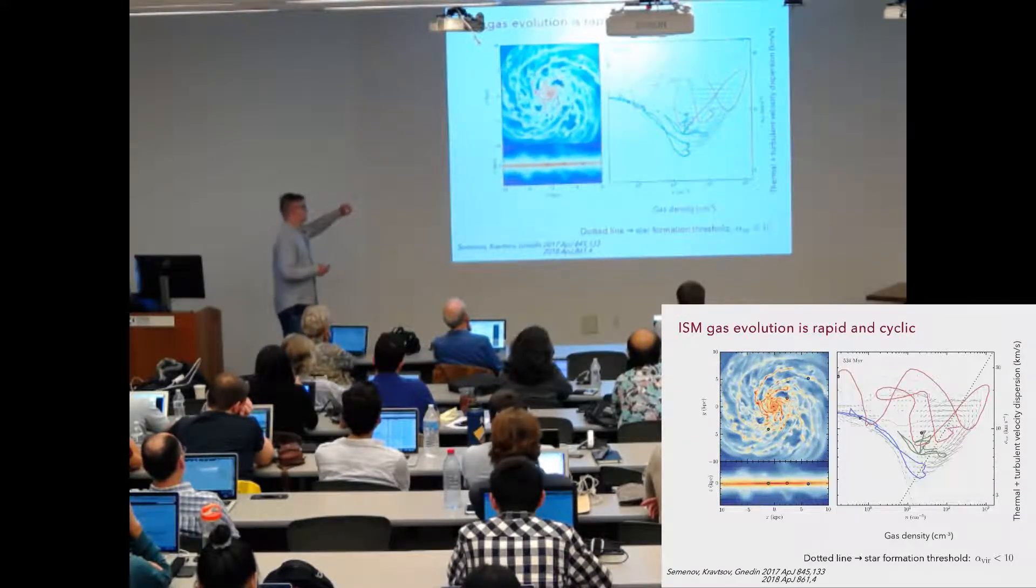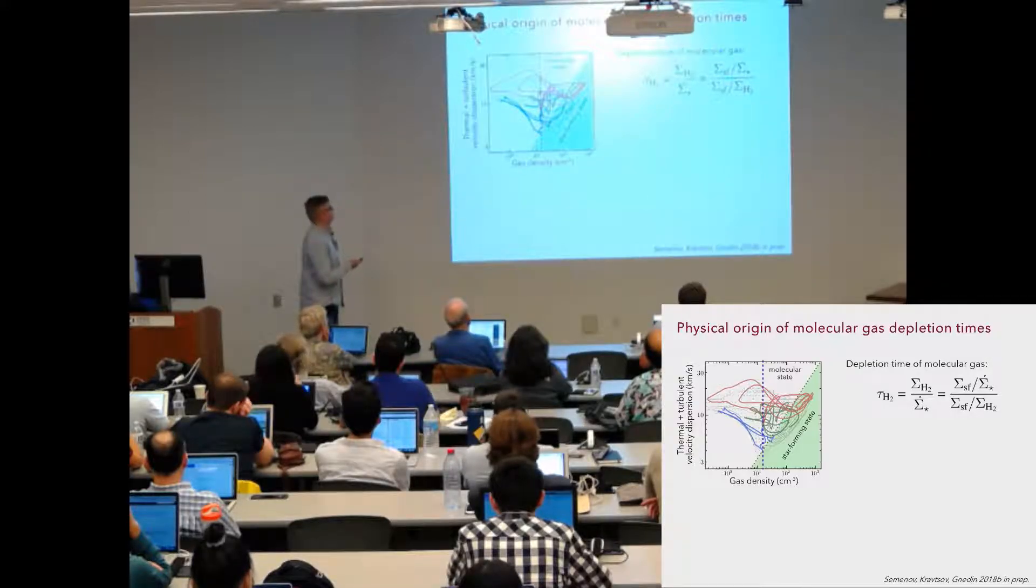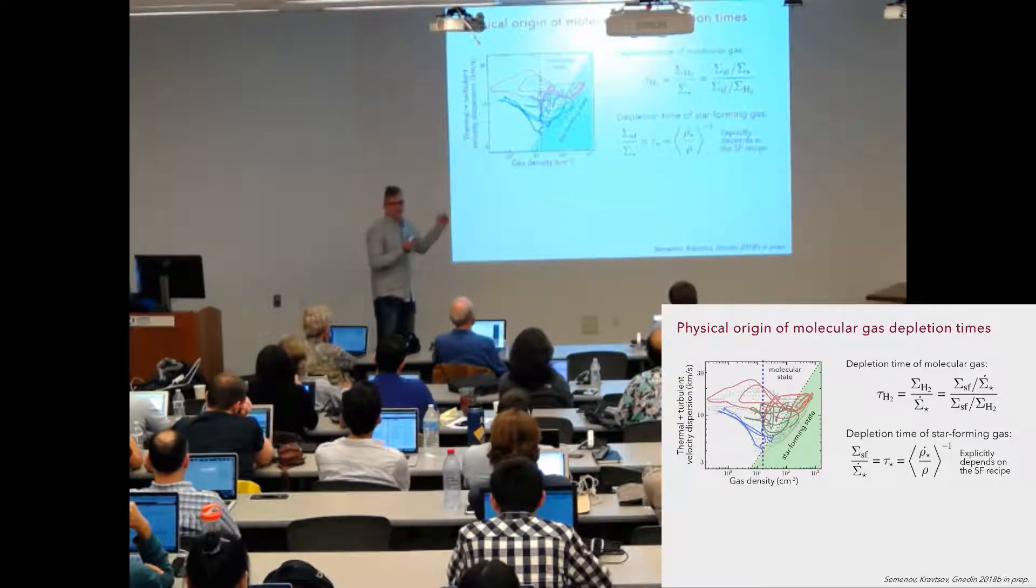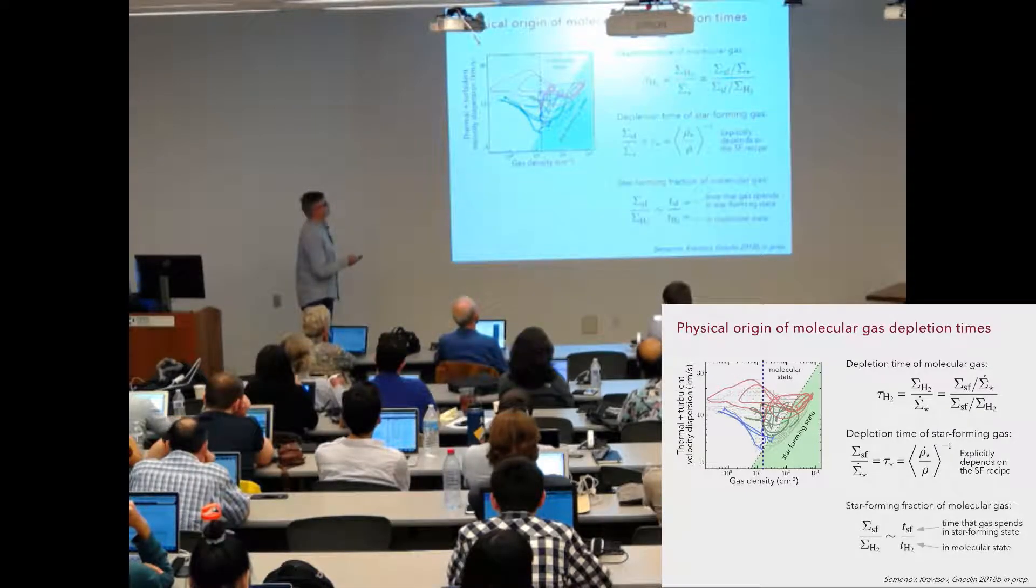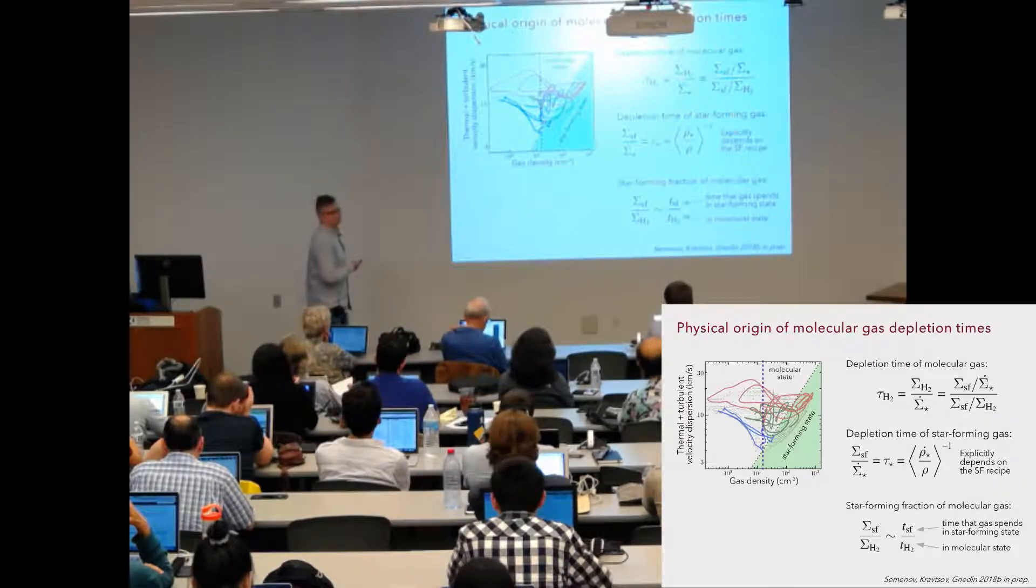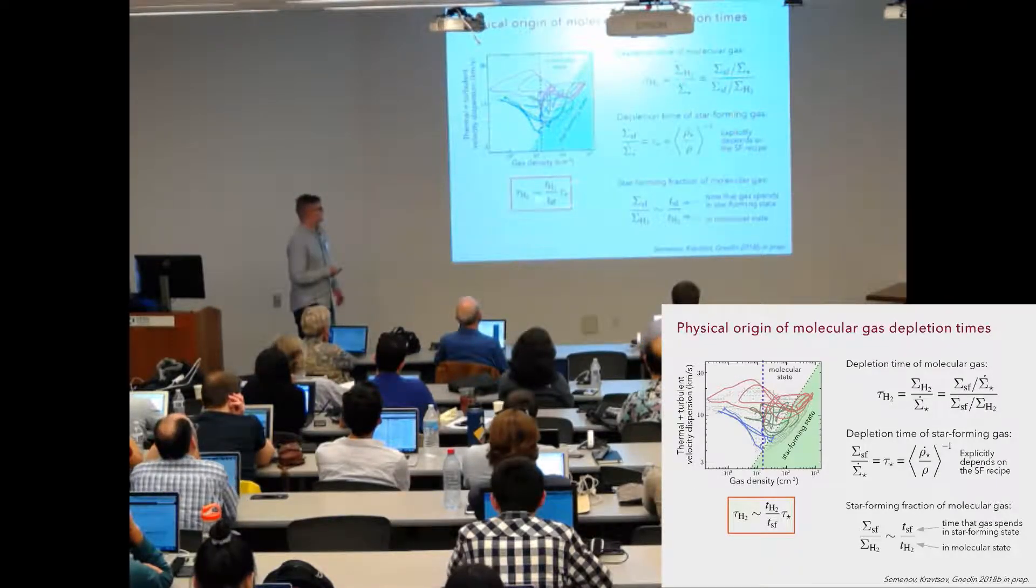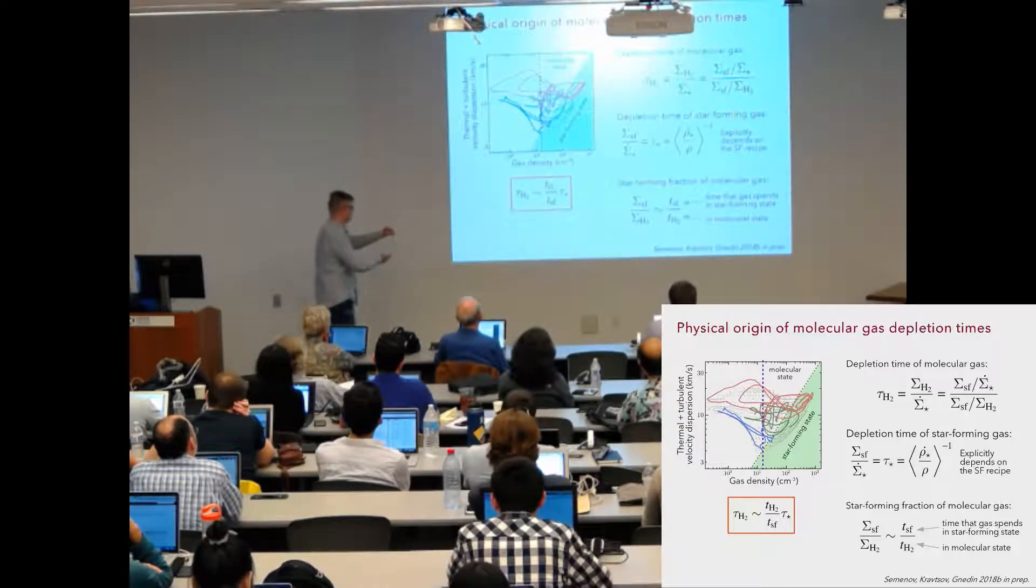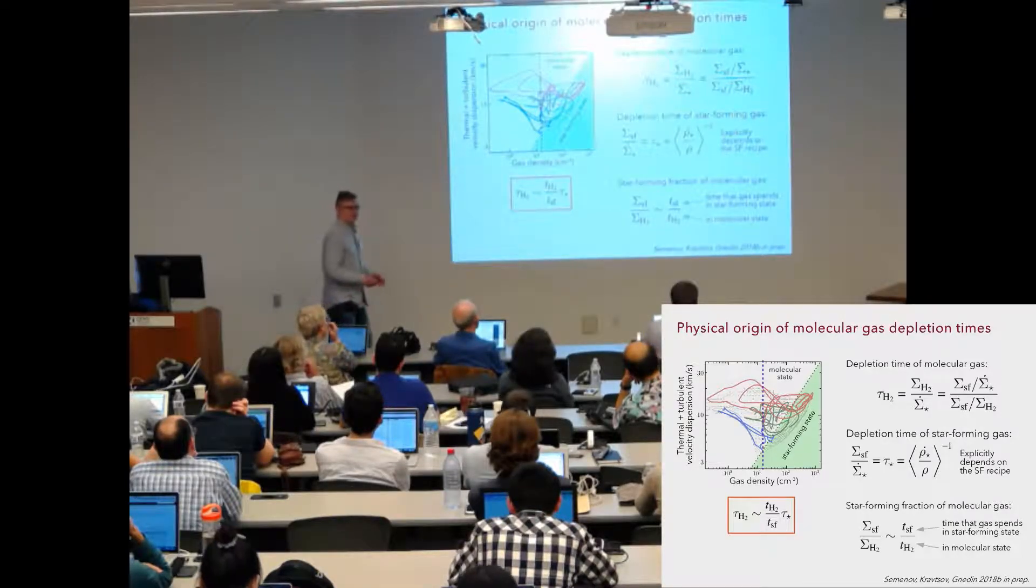The depletion time is regulated by the number of cycles and by what happens with the gas in this non-star forming state. This explains why depletion time is long and why it's, in some regions, weakly sensitive to what we assume in star formation. In order to interpret the slope of the molecular Kennicutt-Schmidt relation, we can rewrite the depletion time of molecular gas as a ratio of the average depletion time in star forming state, so it's our recipe averaged over the gas distribution below this line, divided by the star forming fraction of molecular gas. And then, the star forming fraction of molecular gas will be given by the ratio of times, typical time scales which gas spends in these two states. It would be the time that gas spends in star forming stage and then in molecular stage. Now we can combine all these equations and finally, we can express the depletion time of molecular gas with these time scales of gas evolution.